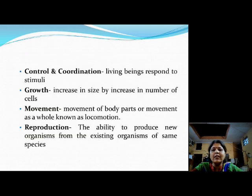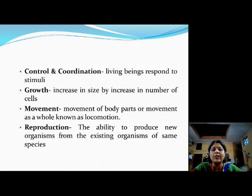The next physiological process is control and coordination. Living beings respond to stimuli, but there is a difference between plants and animals. In the case of plants they respond to stimuli very slowly, because they work only under the action of phytohormones or plant hormones. Whereas in the case of animals the response is very quick, because animals and human beings respond to stimuli through nervous control as well as hormonal control. The endocrine glands secrete hormones which have different functions for control and coordination. Human beings and animals also have a nervous system — the brain and spinal cord — which helps provide control and coordination and respond to stimuli.